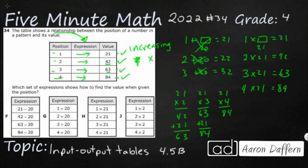Now let's check the answer choices. Option F is 21 minus 20: the minus 20 works in the first case but not for anything else. Option G is plus 20: that's what we already tried — works for the first one but not the others. Option H is times 21, which works for all four. Option J is times 2: that only gives 2, 4, 6, 8 — just the tens digits, not the whole numbers. So my answer is H.